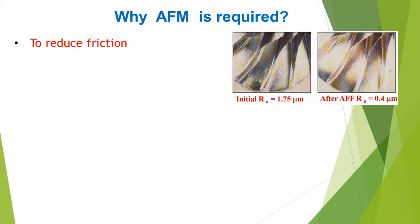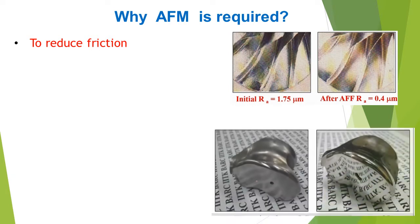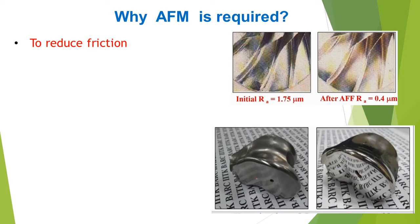Consider this particular example: the turbine plate. The initial roughness value RA is 1.75 micron. After using AFM, RA value of 0.4 microns can be achieved. This is another example — a knee joint. Using AFM, we can get a fine surface finish and improve fatigue life.